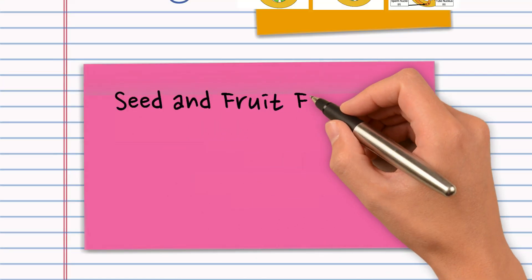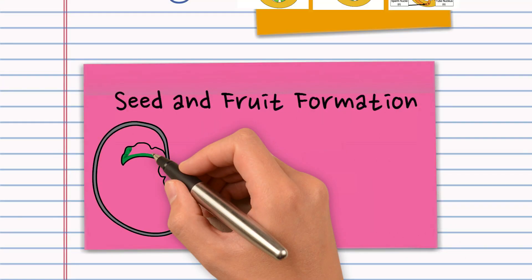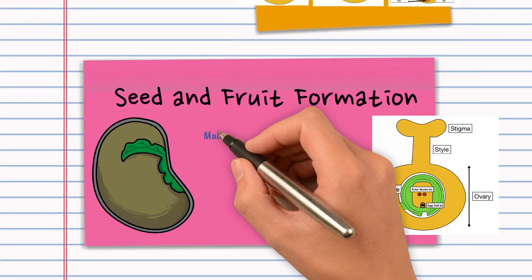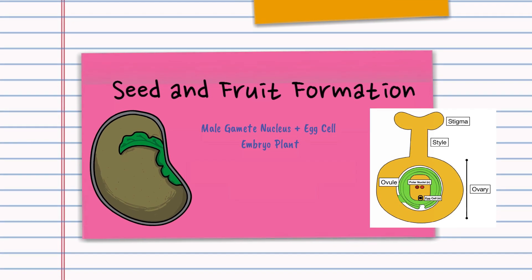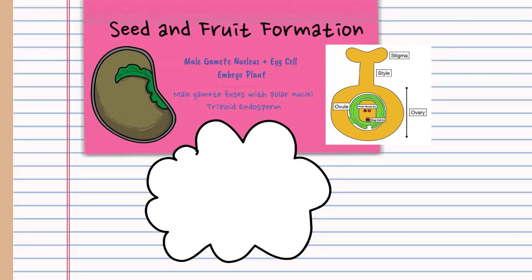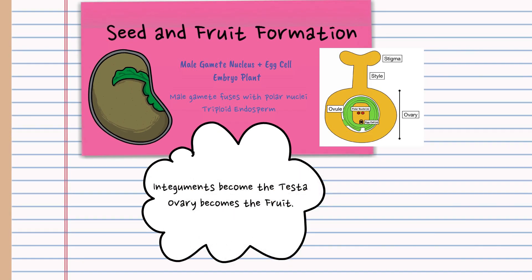So next we have seed and fruit formation. Inside a seed is the embryo plant and cells that nourish it. So we have the embryo plant developing from the zygote and we have the nourishment coming from the triploid endosperm. The coating of the seed, the testa, forms from the integuments, the ovule walls, and the ovary becomes the fruit.